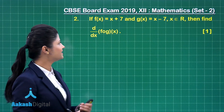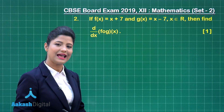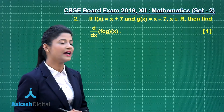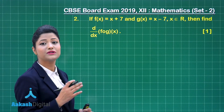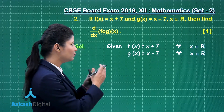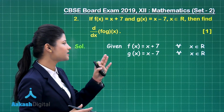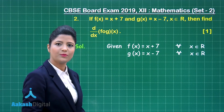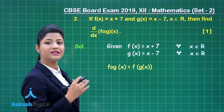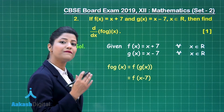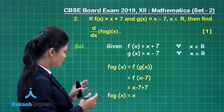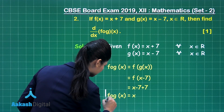Let us take up question number 2. It states: if f(x) = x + 7 and g(x) = x − 7 for all x belonging to the set of real numbers, then find the derivative of f(g(x)) with respect to x. This question carries 1 mark. First, let us obtain the composition f(g(x)). Since g(x) = x − 7, f(g(x)) = f(x − 7) = (x − 7) + 7 = x. So f(g(x)) = x.